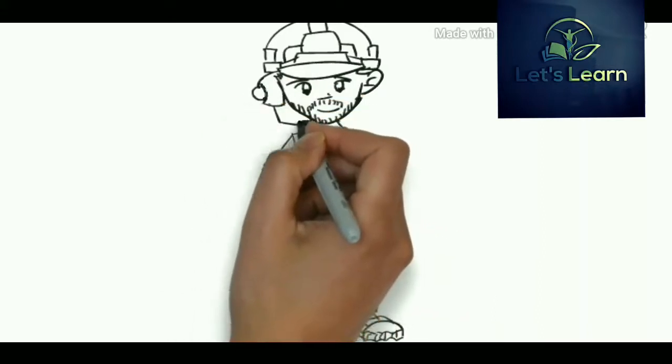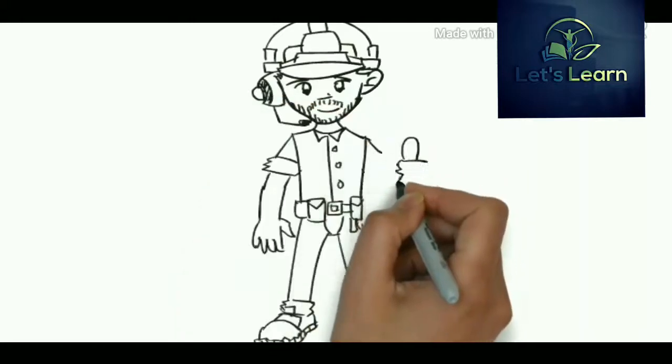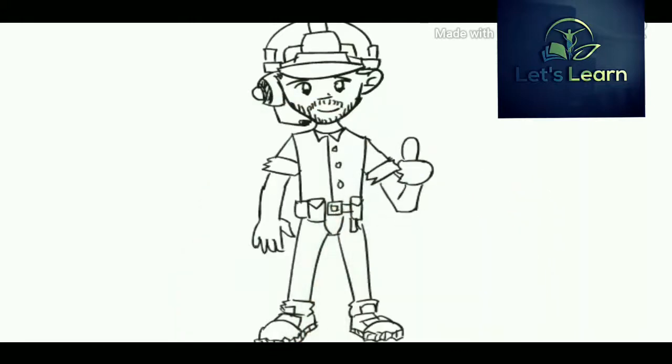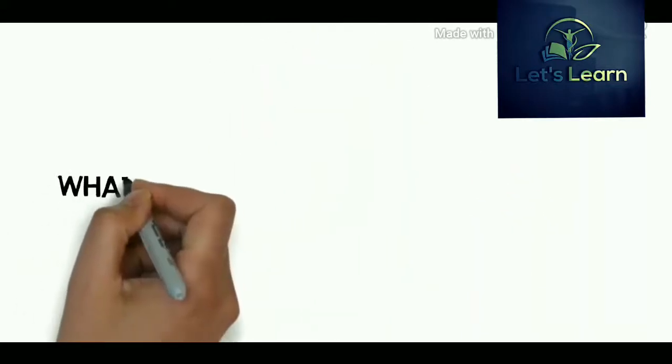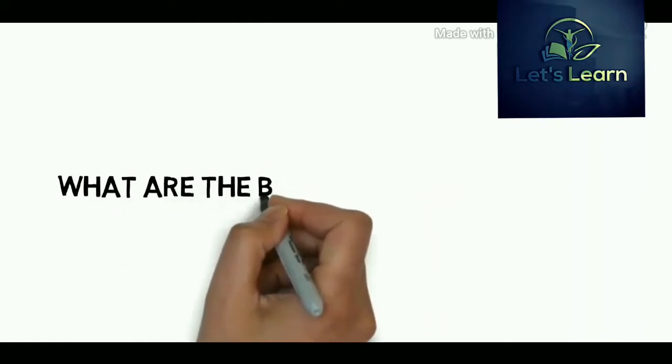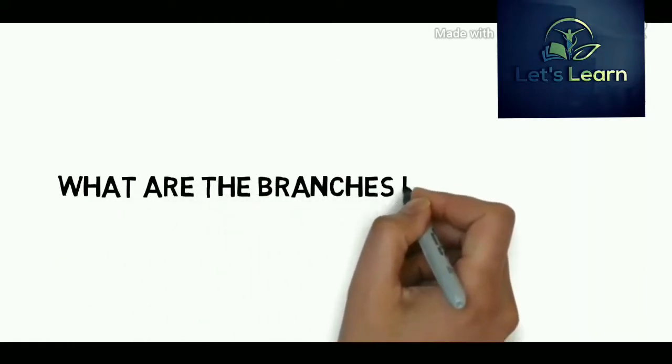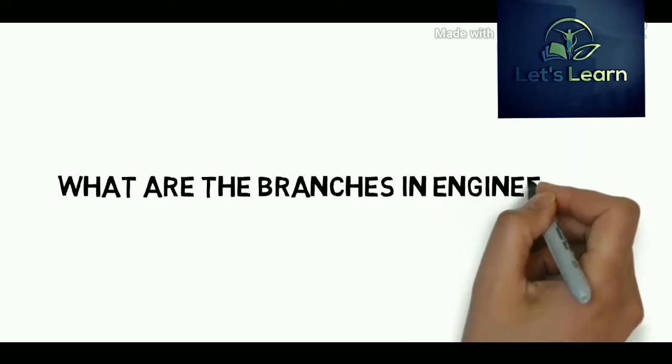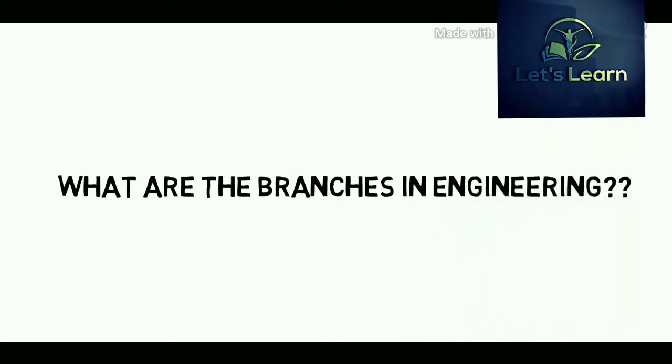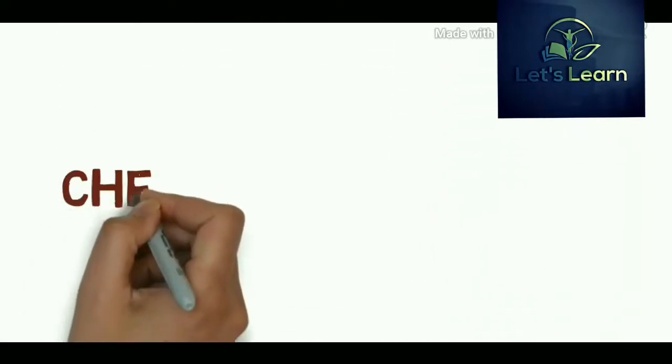So another question is: what are the branches in engineering? Let's see one by one. Engineering is a broad discipline which is often broken down into several sub-disciplines. There are 40 different types of engineering fields.